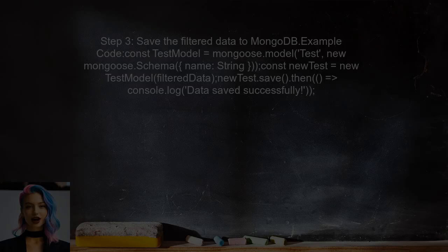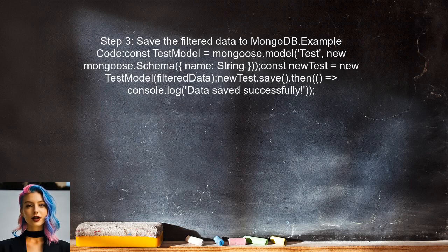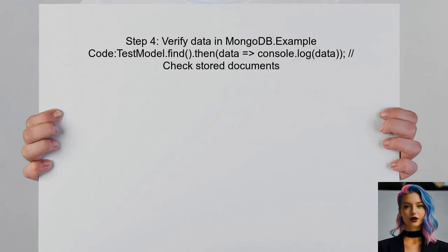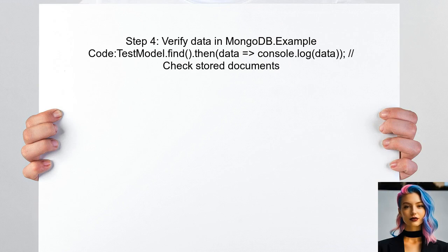Now you can proceed to save the filtered data into MongoDB. This step involves using Mongoose to create a new document with the filtered object. Finally, verify that the data has been stored correctly in MongoDB by querying the database and checking the saved documents.